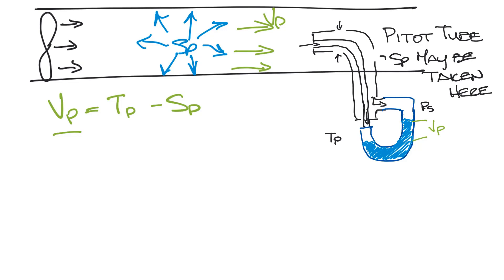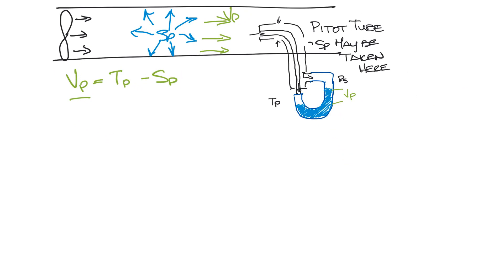Let's look at why velocity pressure is important. Knowing the velocity pressure allows us to calculate the velocity of the air. Velocity equals 4005 times the square root of the velocity pressure. Knowing the velocity helps you get the CFM. CFM equals area times velocity, where CFM is your cubic feet per minute, your airflow volume. The area we're talking about is free area.